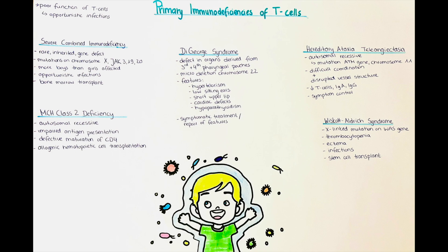Treatment involves addressing the underlying health defects that come with the disease — such as surgery for potential heart defects, and supplementation of calcium and vitamin D for hypoparathyroidism. If the patient has severe thymus dysfunction, they may require a transplantation of thymus tissue or a bone marrow transplant.